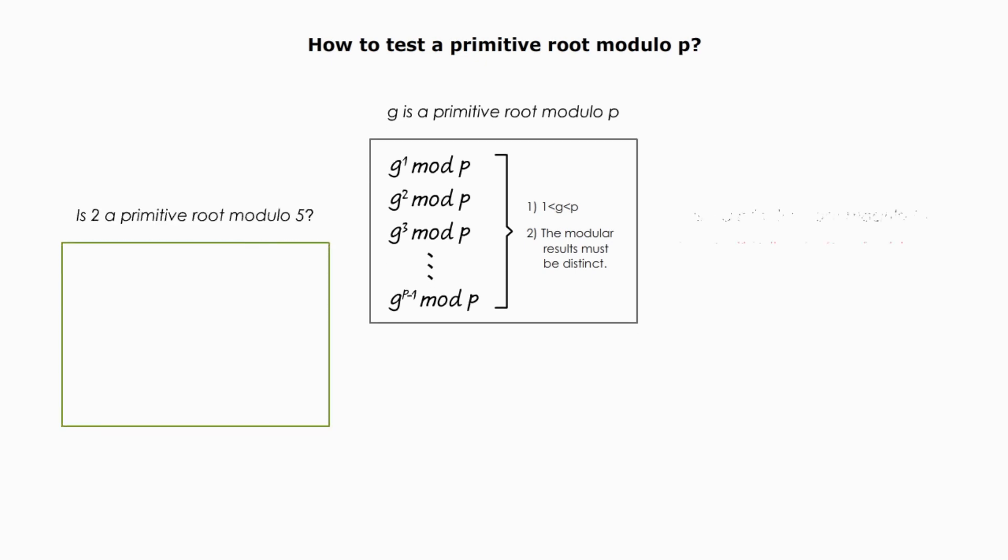Let me use very small numbers to understand the number g, p. Suppose p is 5, very small number, is a prime number. Let me test if 2 is a primitive root modular 5.